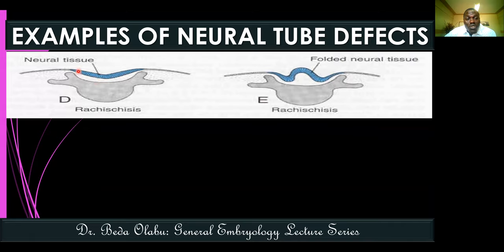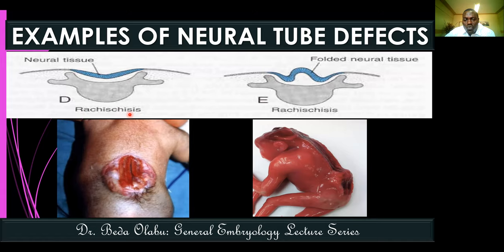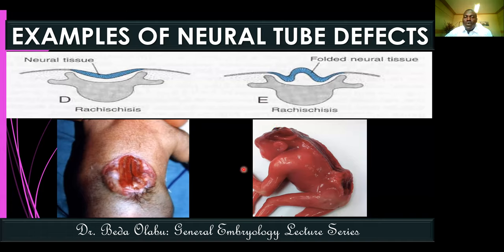When the neural plate fails to fuse completely in a small segment, the open neural plate is called rachischisis. If the failure affects the whole neural axis - both cranial and spinal - it is called craniorachischisis. The word 'rachis' refers to the spine and 'schisis' means open or split.